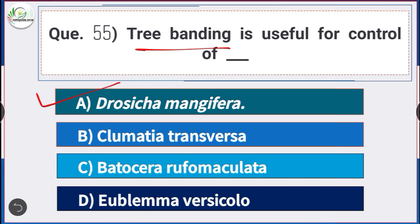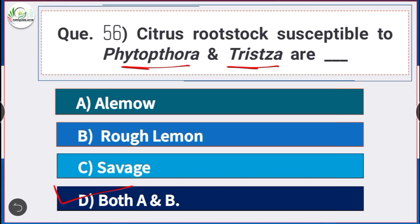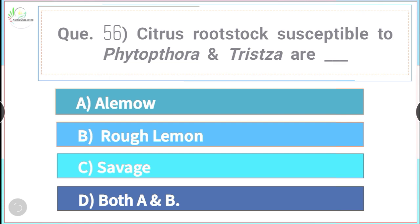Question number 56: Citrus rootstocks susceptible to Phytophthora and tristeza are — answer option D — both A and B — Alemow and rough lemon are the citrus rootstocks susceptible to Phytophthora and tristeza.